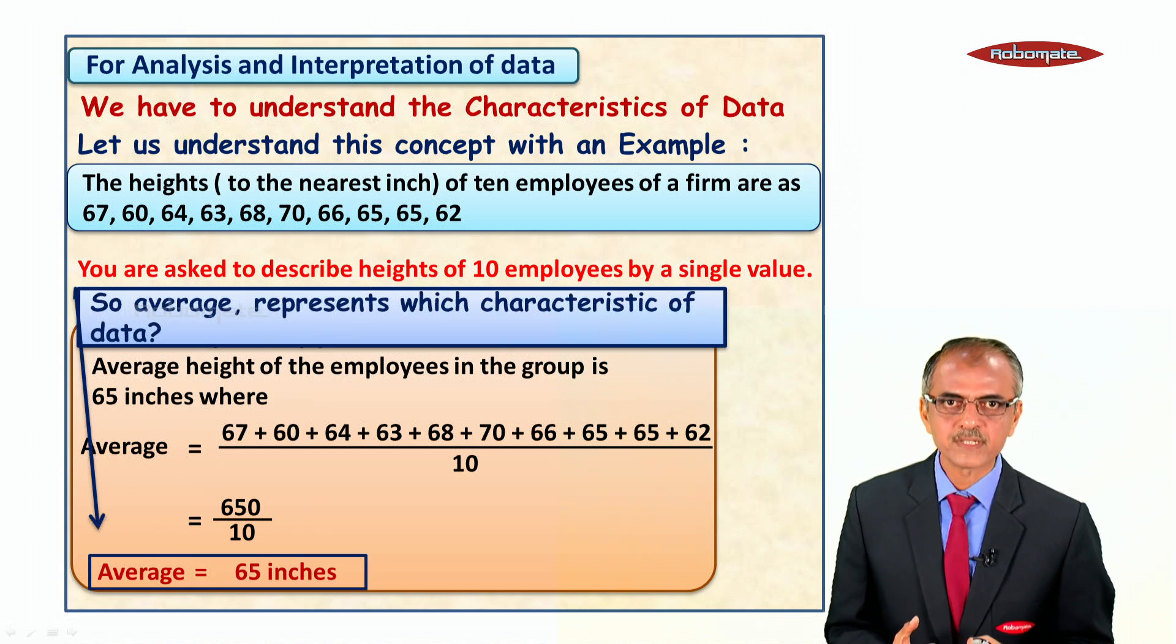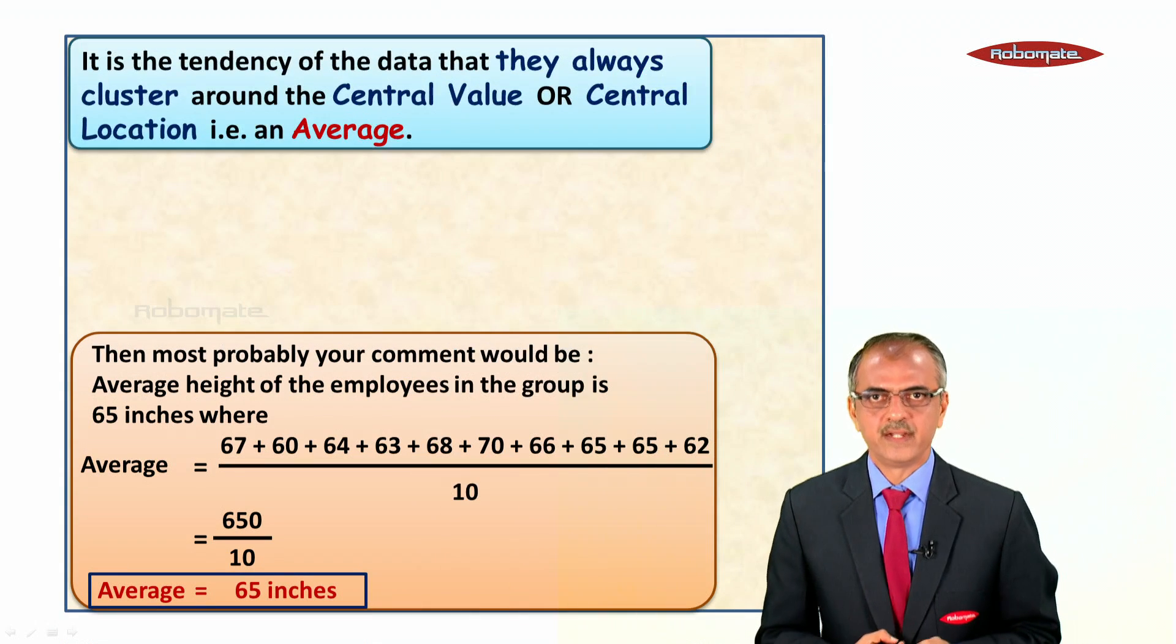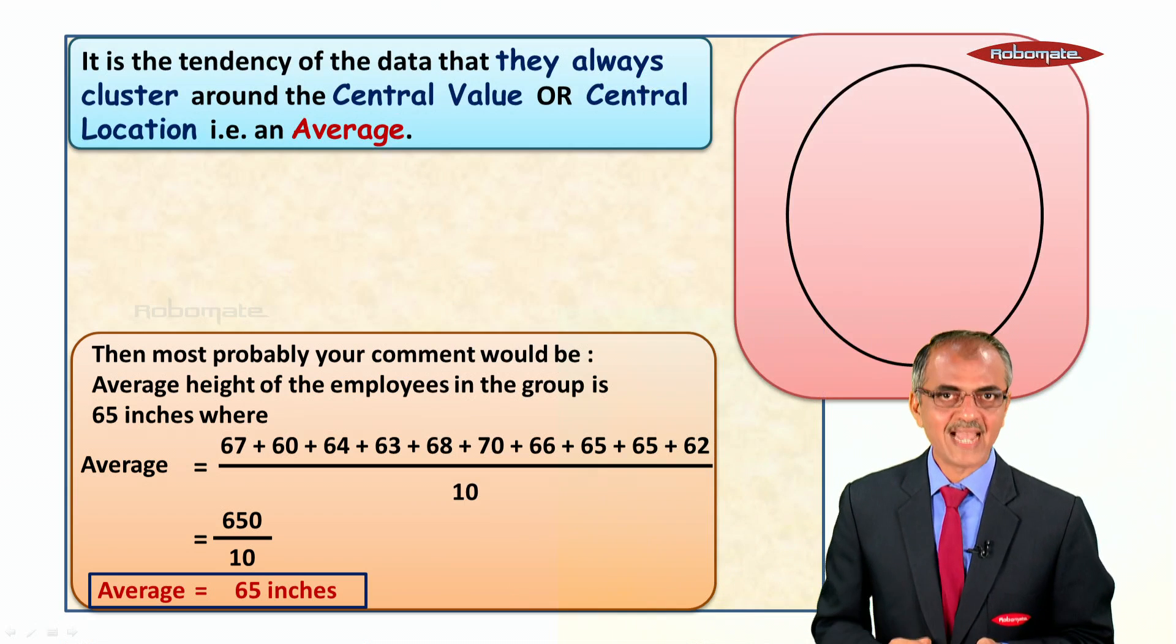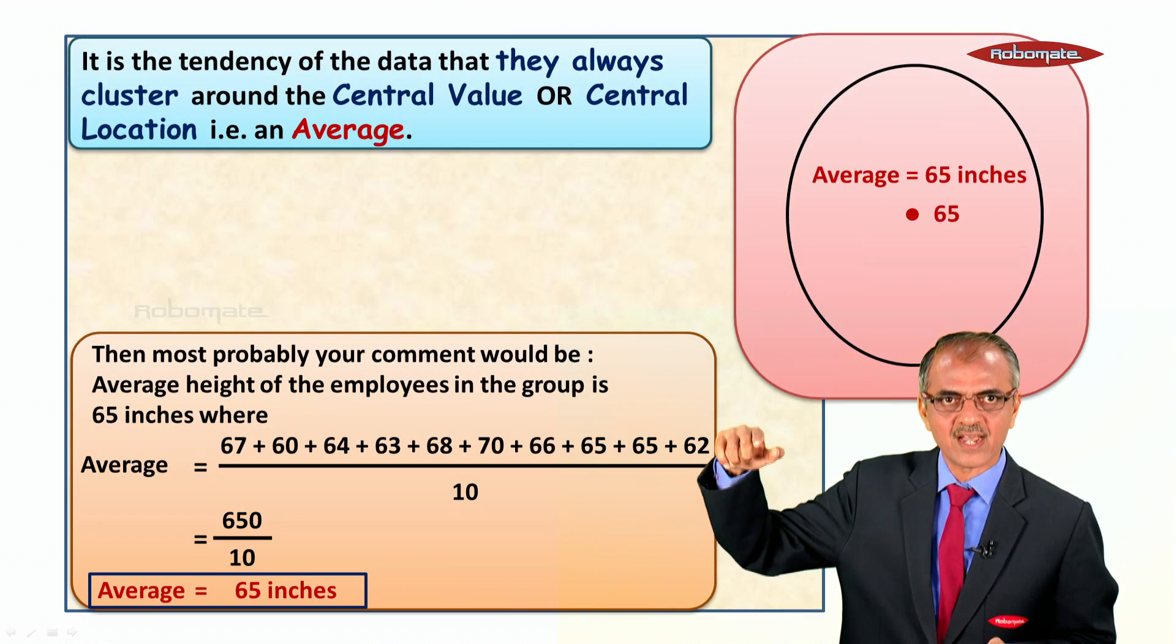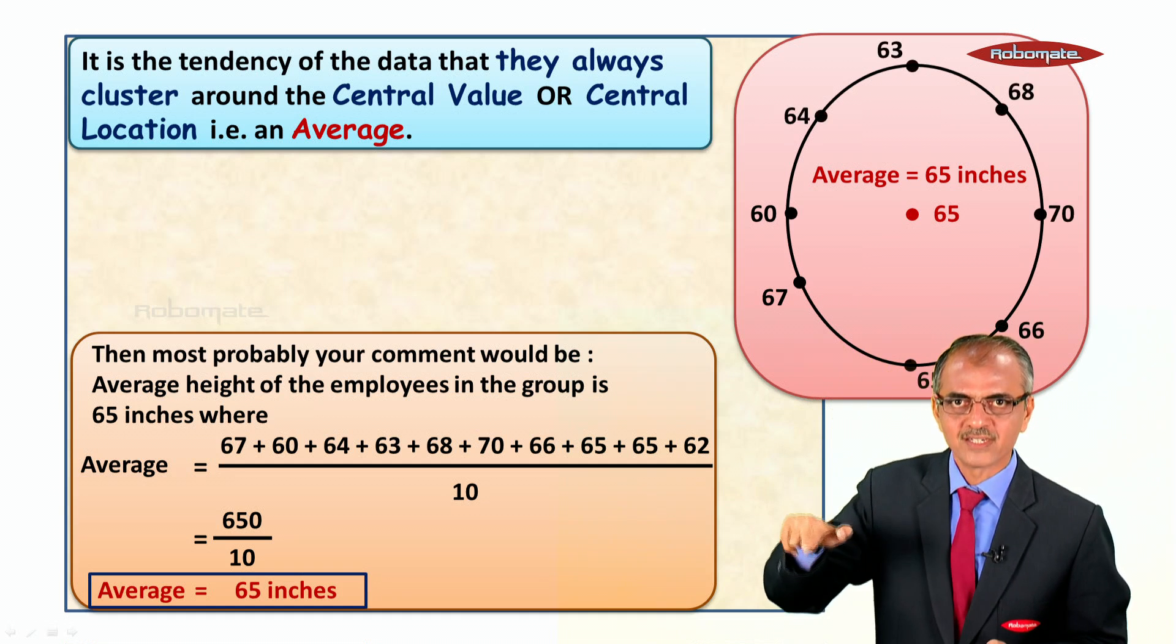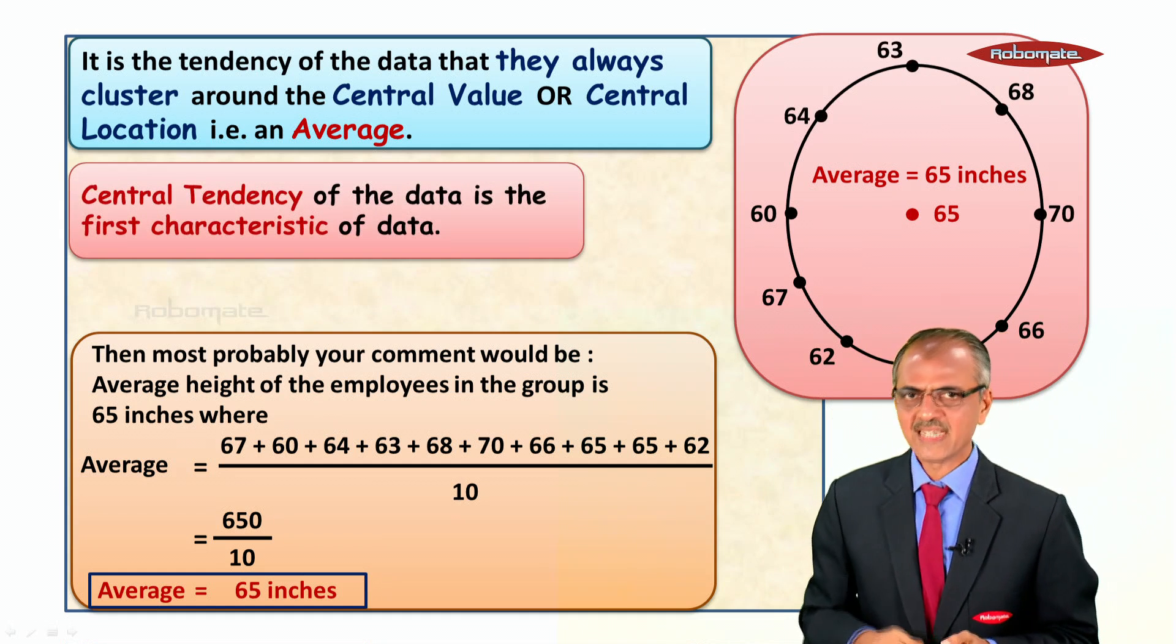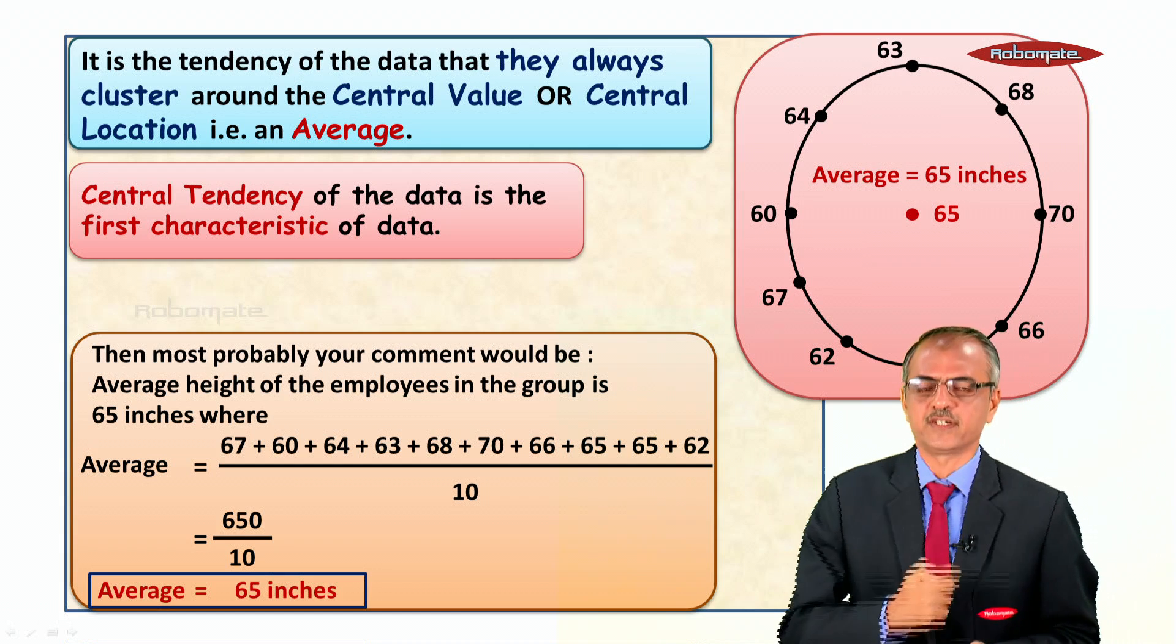Which characteristic of data does average represent? It is the tendency of the data that they always cluster around the central value or central location, that is an average.